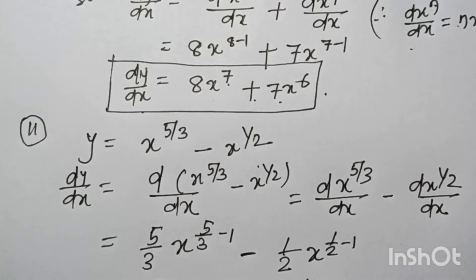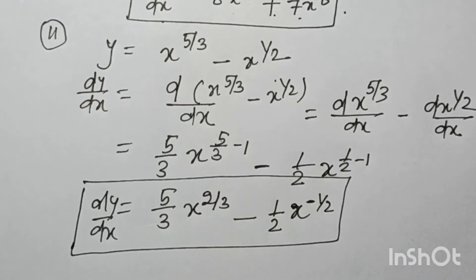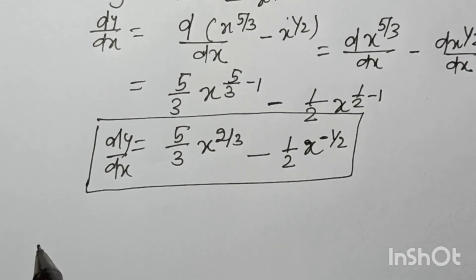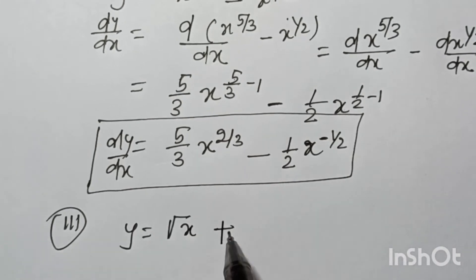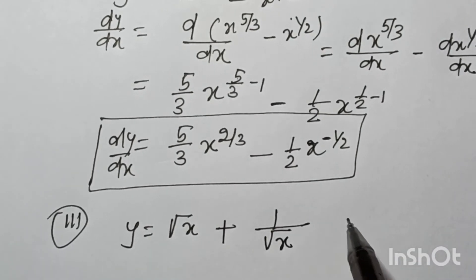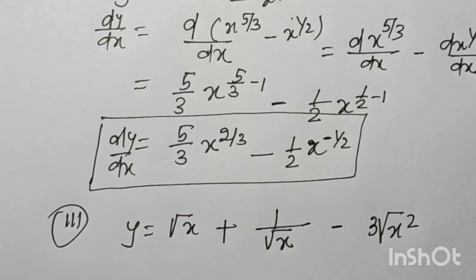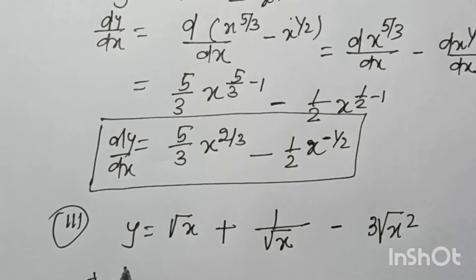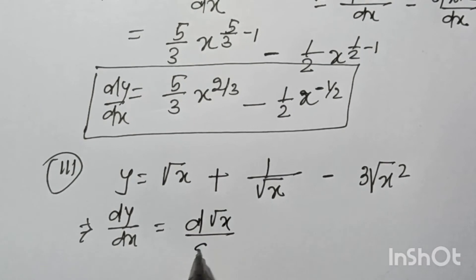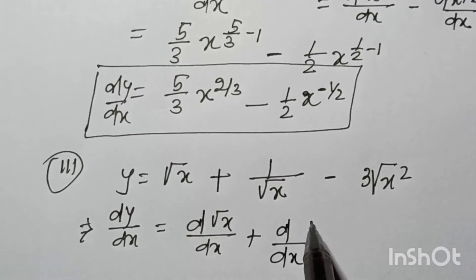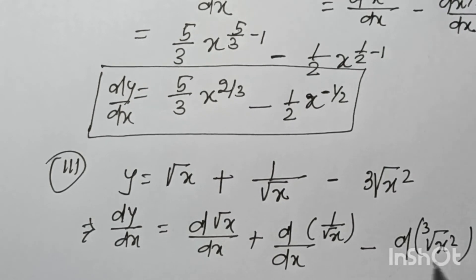So dy/dx equals 5/3 · x^(2/3) minus 1/2 · x^(−1/2). Now question number 3: y is equal to √x plus 1/√x minus ∛(x²). We can write dy/dx as d(√x)/dx plus d(1/√x)/dx minus d(x^(2/3))/dx.